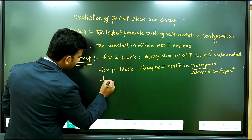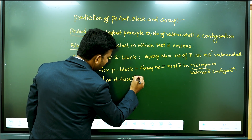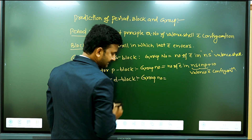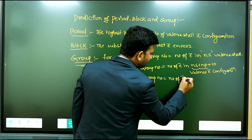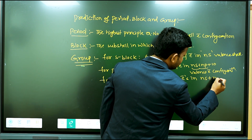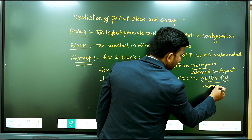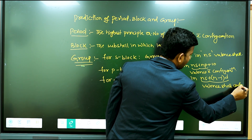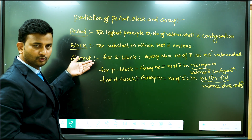For D block, group number is equal to the number of electrons in ns plus (n-1)d — that is the valence electron configuration. So this is the rule for period, block, and group.